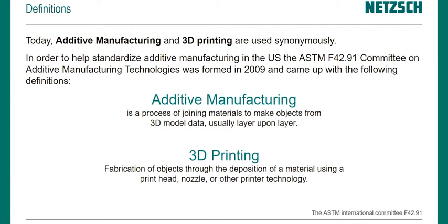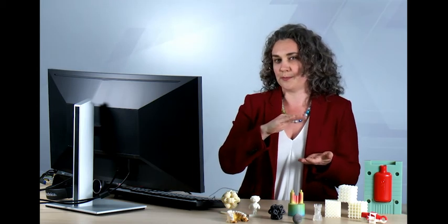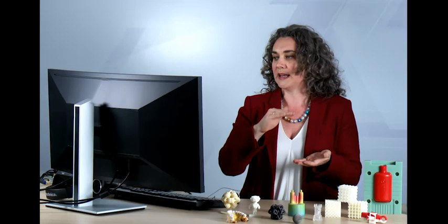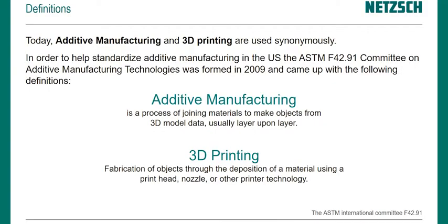They defined additive manufacturing as a process of joining materials to make objects from 3D model data, usually layer upon layer. It's a very general description of the process — we build up a 3D object layer by layer and join them in some way.